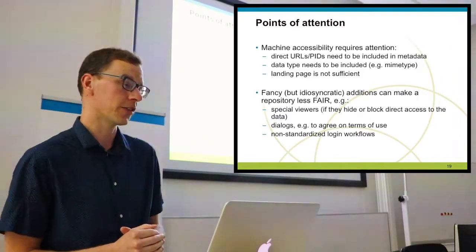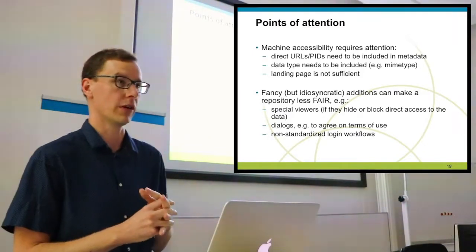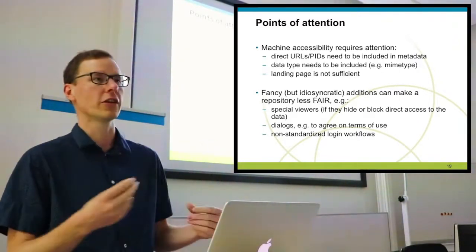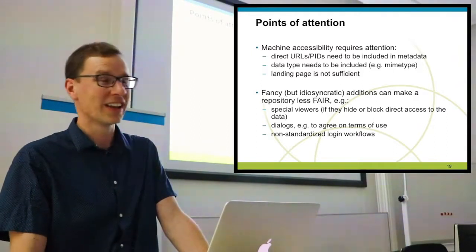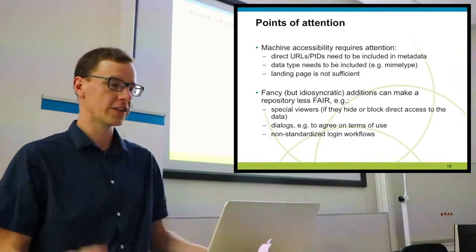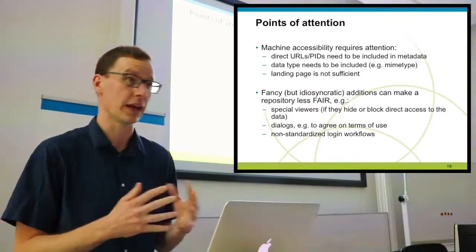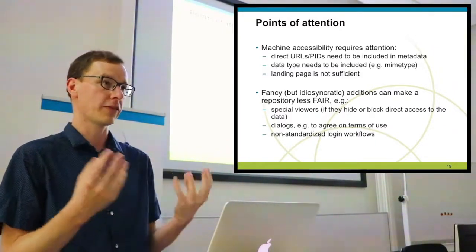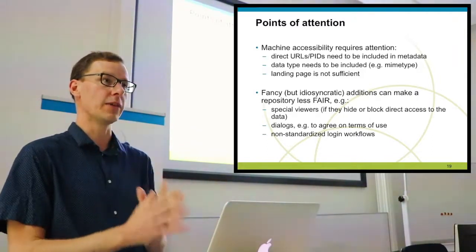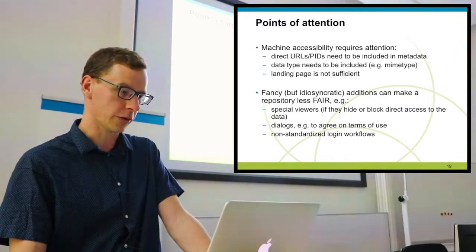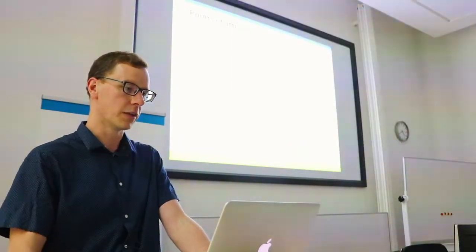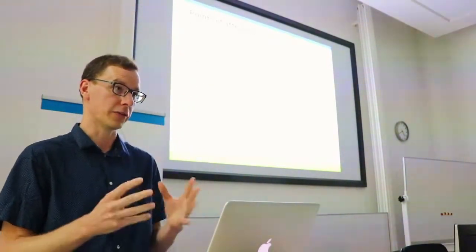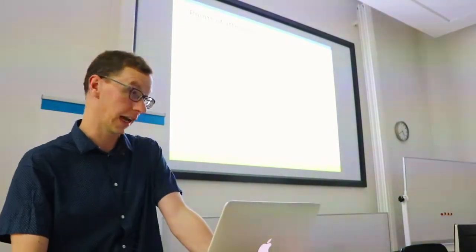Finally, non-standardized login workflows — suppose you have to register an account, provide additional information, or fill in a CAPTCHA. Even for human beings CAPTCHAs are quite difficult, but if you want machine-processable access, a CAPTCHA is a major stumbling block. These are important points to take home whenever you're thinking about FAIR data and the further steps in the chain like automated processing.